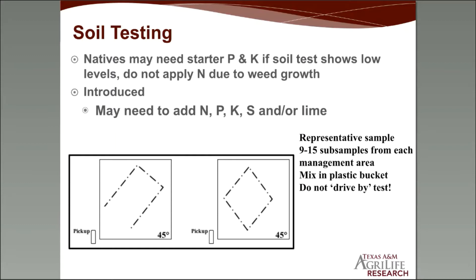To take a soil test, get out of the pickup truck and walk your pasture. Do a transect, a W, or an X pattern — just make sure you cover that pasture. Dig a few holes, mix those in a plastic bucket, and get 9 to 15 small samples to send in as one sample. For natives, you may not need phosphorus or potassium, but apply if soil test shows low levels. Don't apply nitrogen because it might encourage weed growth that will outcompete the plants you're trying to establish. For introduced forages, you may need to add nitrogen, phosphorus, potassium, sulfur, and lime if your pH is low.